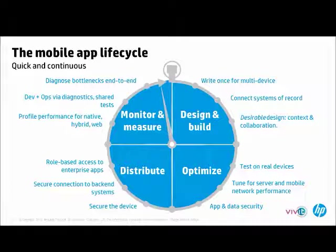The next phase of the mobile application lifecycle is optimizing or testing, with concerns around testing on real devices, tuning applications for server and network performance, and managing security of data on the mobile device and corporate data being exchanged. The next stage is distributing mobile apps, where IT administrators manage role-based access, securing the backend, device, and corporate data. Finally, once deployed, diagnosing bottlenecks — whether on the network, the device, or the backend — is critical for monitoring and measuring mobile apps.